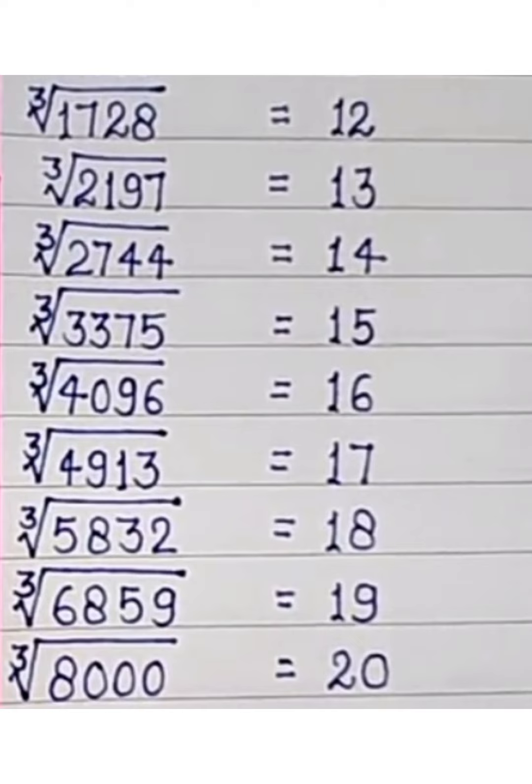14 cube root is 2744, 15 cube root is 3375, 16 cube root is 4096, 17 cube root is 4913.